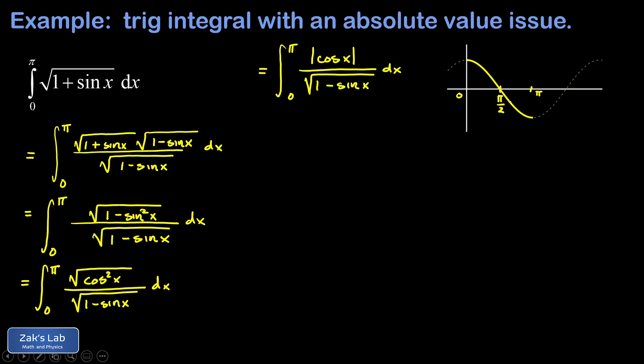I can see the cosine function is positive from zero to pi over 2 but negative from pi over 2 to pi. So we're going to have to split this integral into two pieces, one for each of those signs.